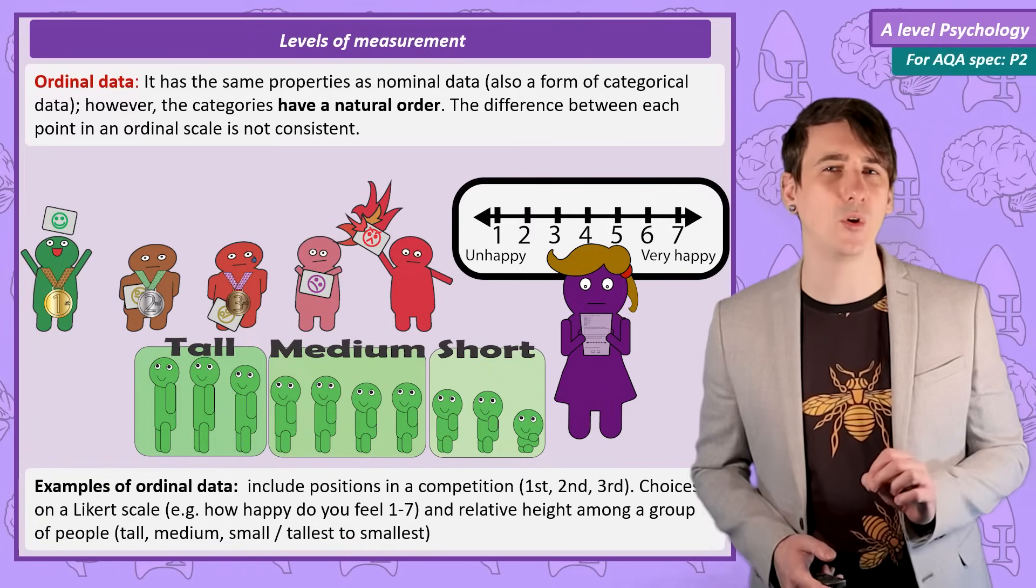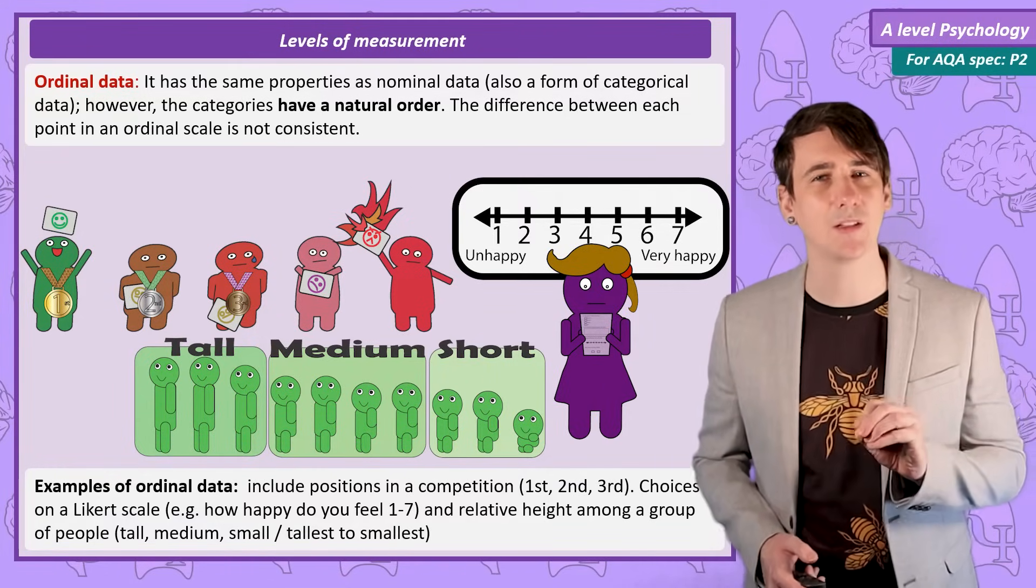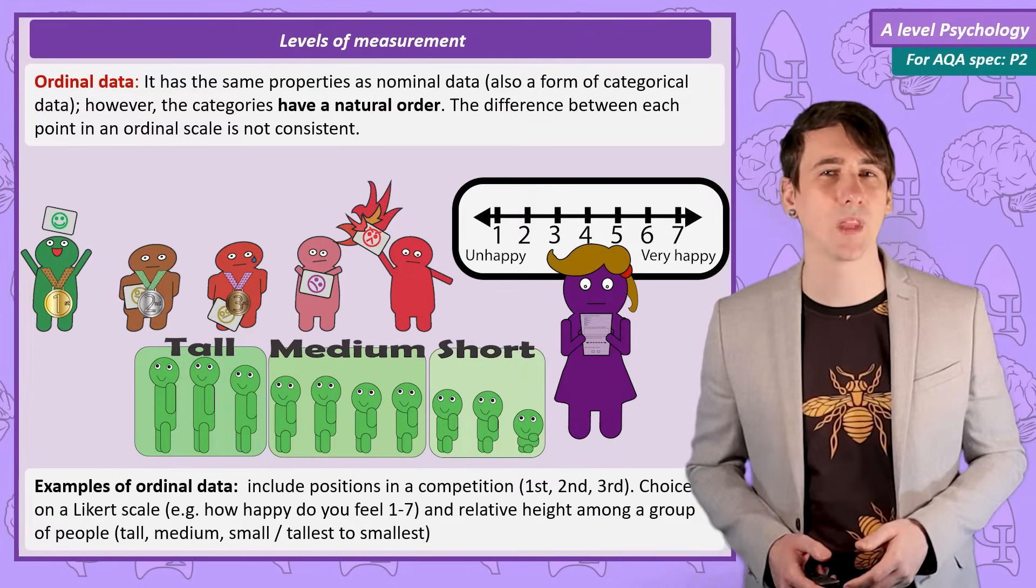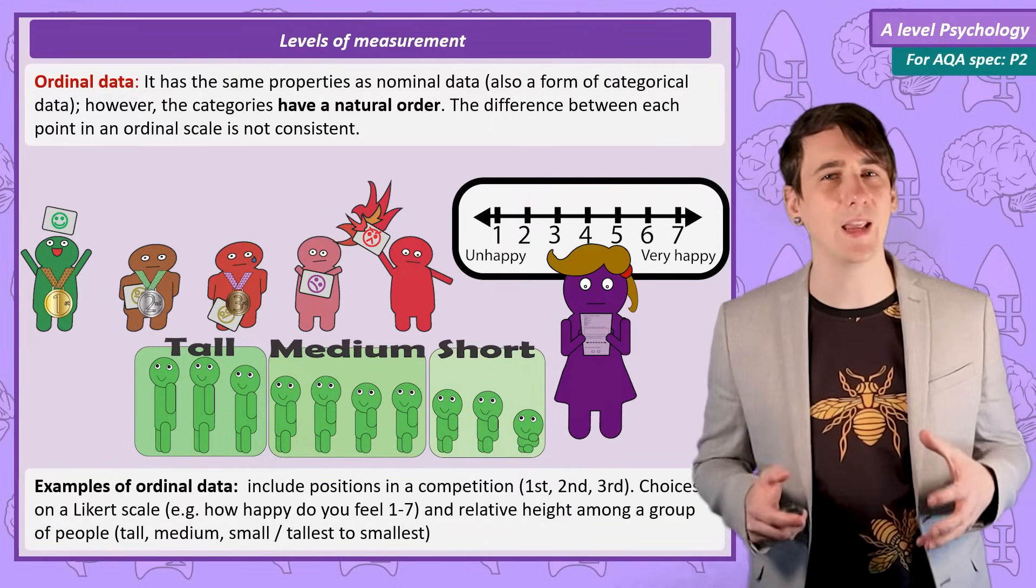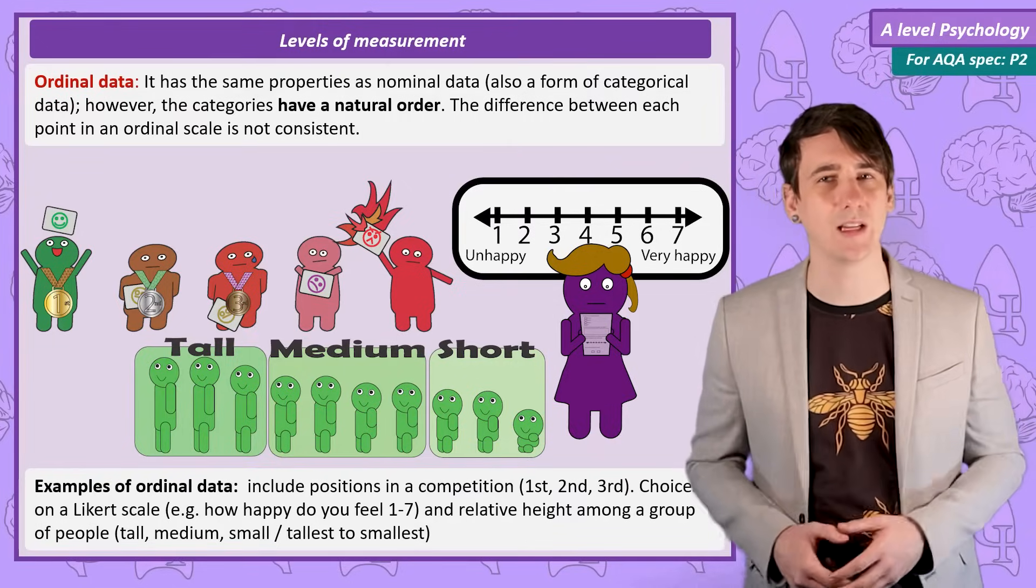So, to be clear, with ordinal data each data point relates to the same variable and can be placed into ascending or descending order. We can talk about how each data point relates to each other data point, but all we are doing here is ranking our data.